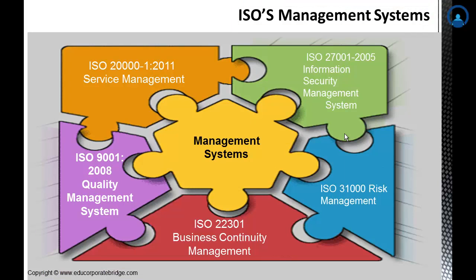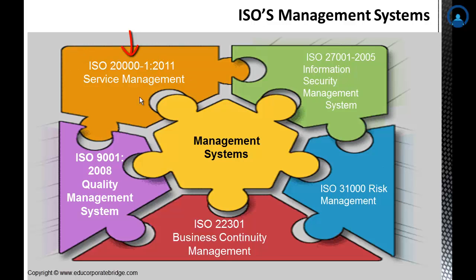Looking at the ISO management system picture, it shows ISO 27001-2005 Information Security Management System at the center. Related standards include ISO 31000 for risk management, ISO 22301 for business continuity management, ISO 9001-2008 for quality management, and ISO 20000-2011 for service management, which is very important in IT industries. ISO 9001 gives reputation to companies providing products and services — that is a key benefit of ISO certifications.